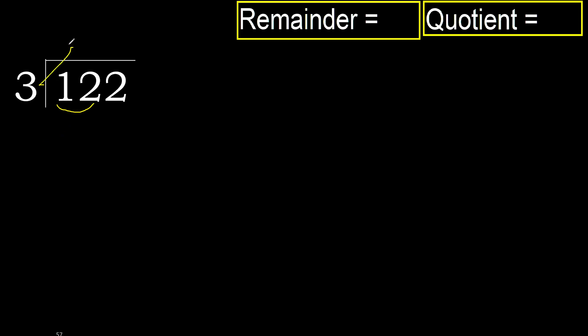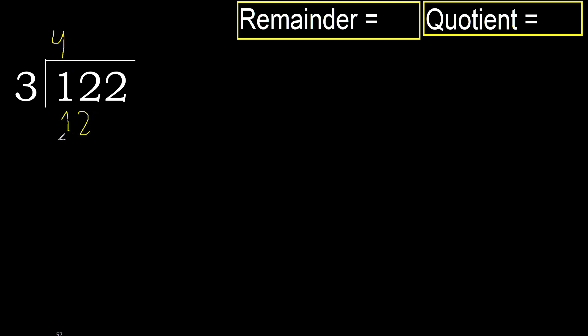3 multiplied by which number is nearest to 12 but not greater? 3 multiplied by 5 is 15, which is greater. Multiplied by 4, 12 is not greater — ok.